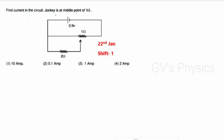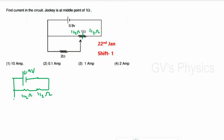Third question: Find the current in the circuit when the jockey is at the midpoint of the 1 ohm wire. The midpoint divides the 1 ohm into two parts of 1/2 ohm each. Redrawing: a 0.9 V battery is connected to the 1 ohm wire (split into 1/2 ohm and 1/2 ohm), with a separate 2 ohm resistance connected at the midpoint. The 1/2 ohm and 2 ohm are in parallel.